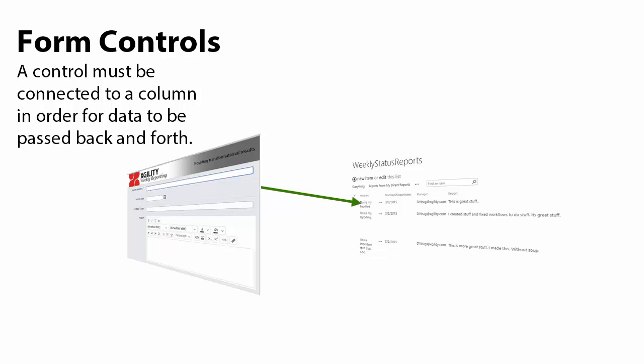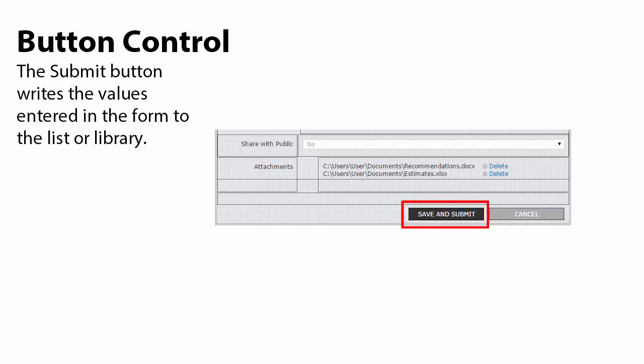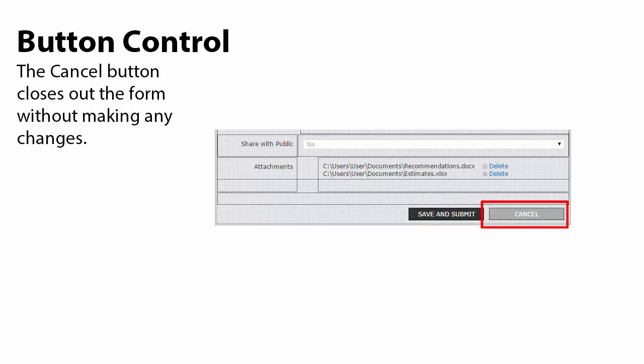The final topic I want to cover in this video is the button control. The button control performs some action when it's clicked. The two most common actions are the submit and cancel buttons. Submit writes the values entered in the form to the list or library. Cancel closes out the form without making any changes.